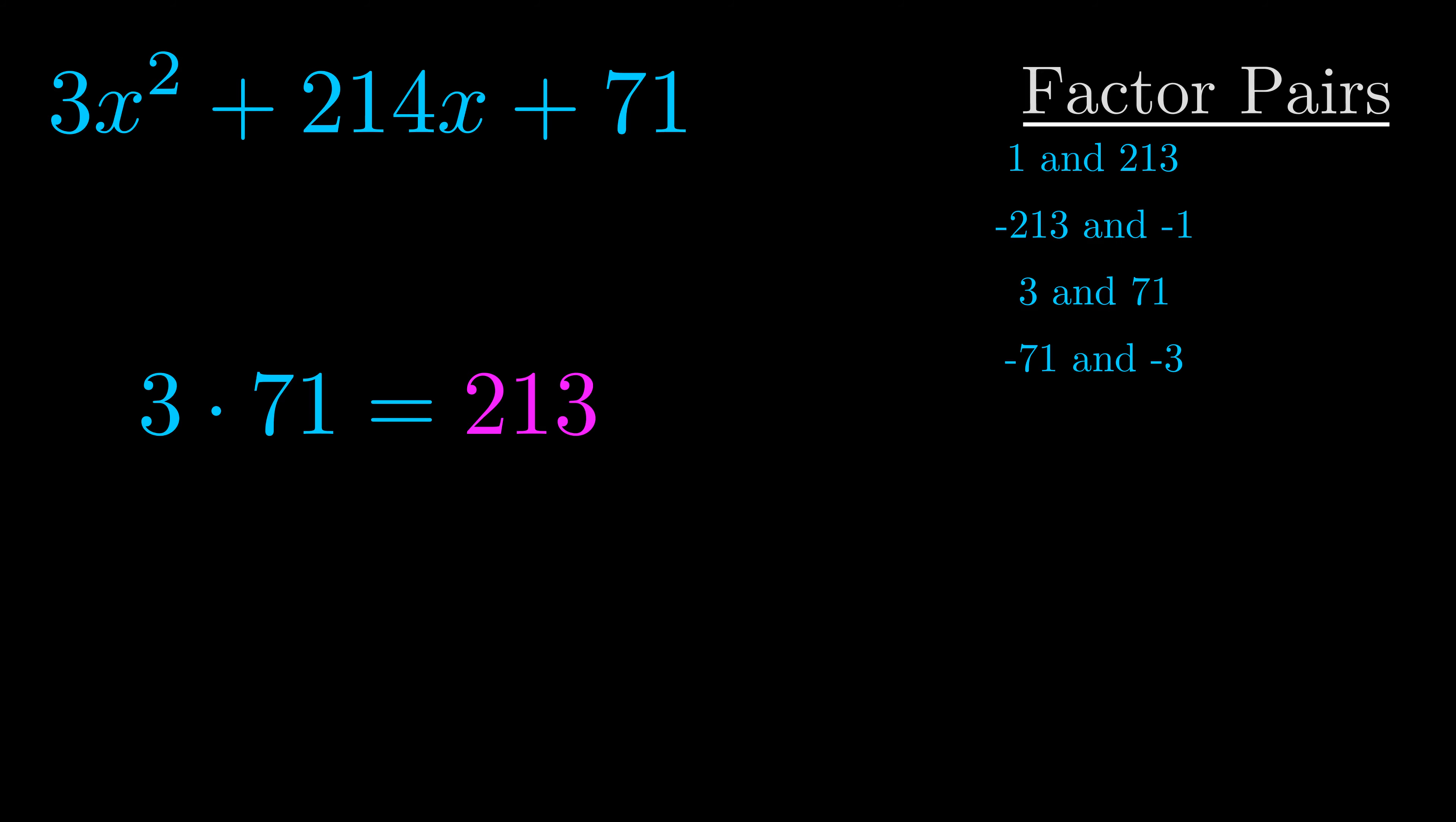The b value is the coefficient on the x term. That's the middle term, the one that we haven't done anything with yet. And really this is the only factor pair that we need.